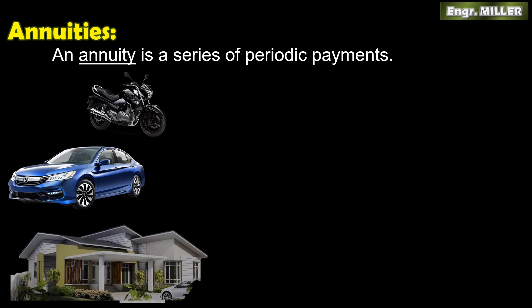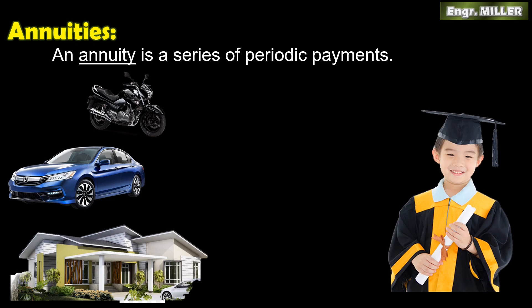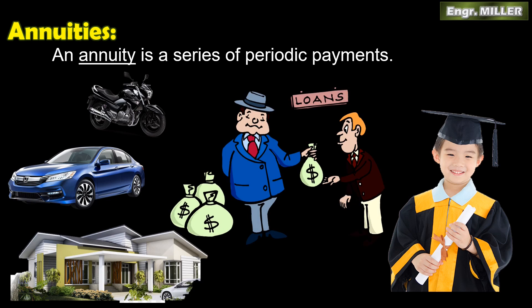The same applies to car installments, house-and-lot payments, educational plans — where you pay periodically so your child receives a future benefit — and loans from banks, cooperatives, or informal lenders. As long as the payment amount and interval are uniform — whether yearly, quarterly, monthly, or weekly — that is an annuity.